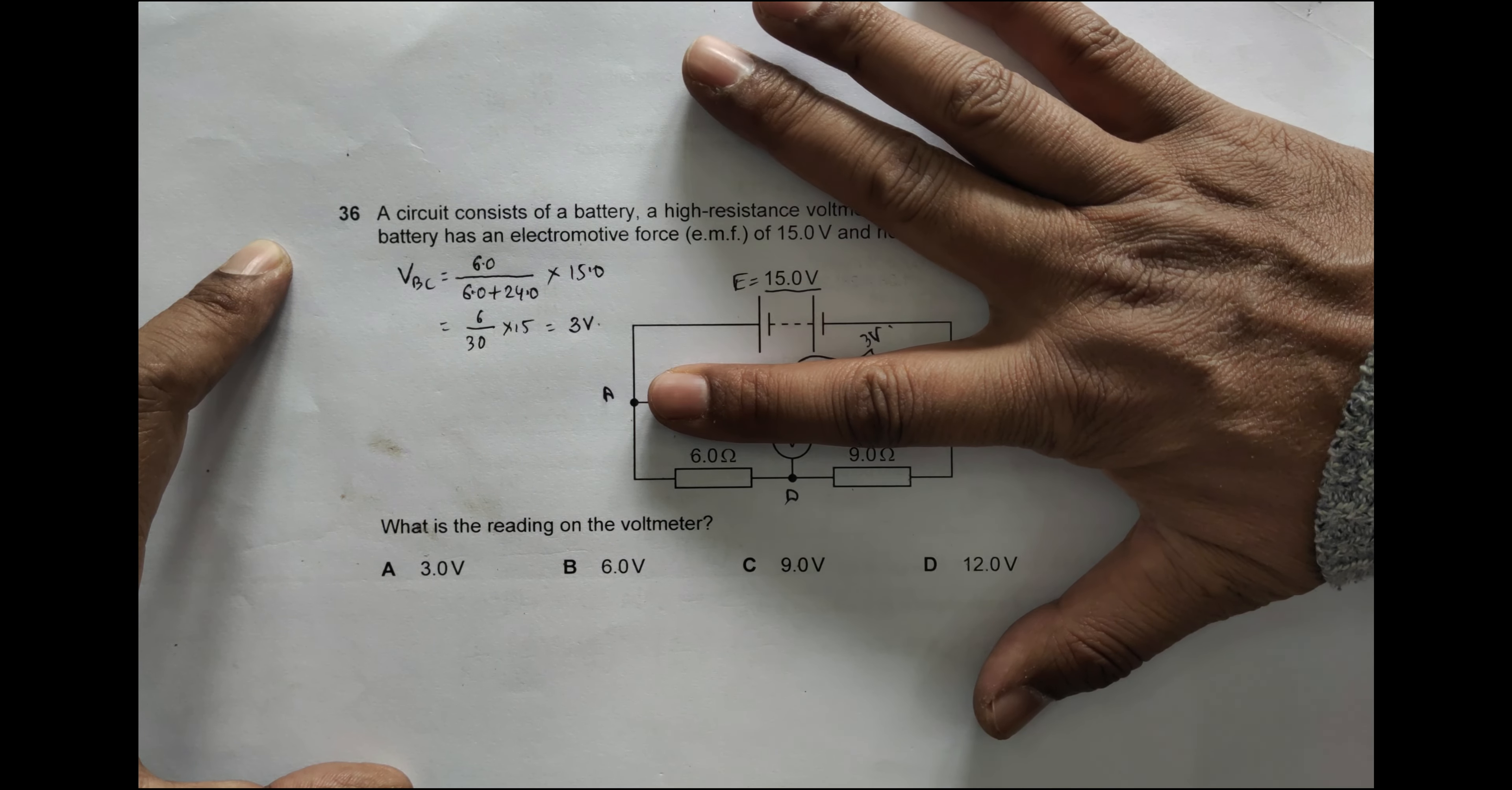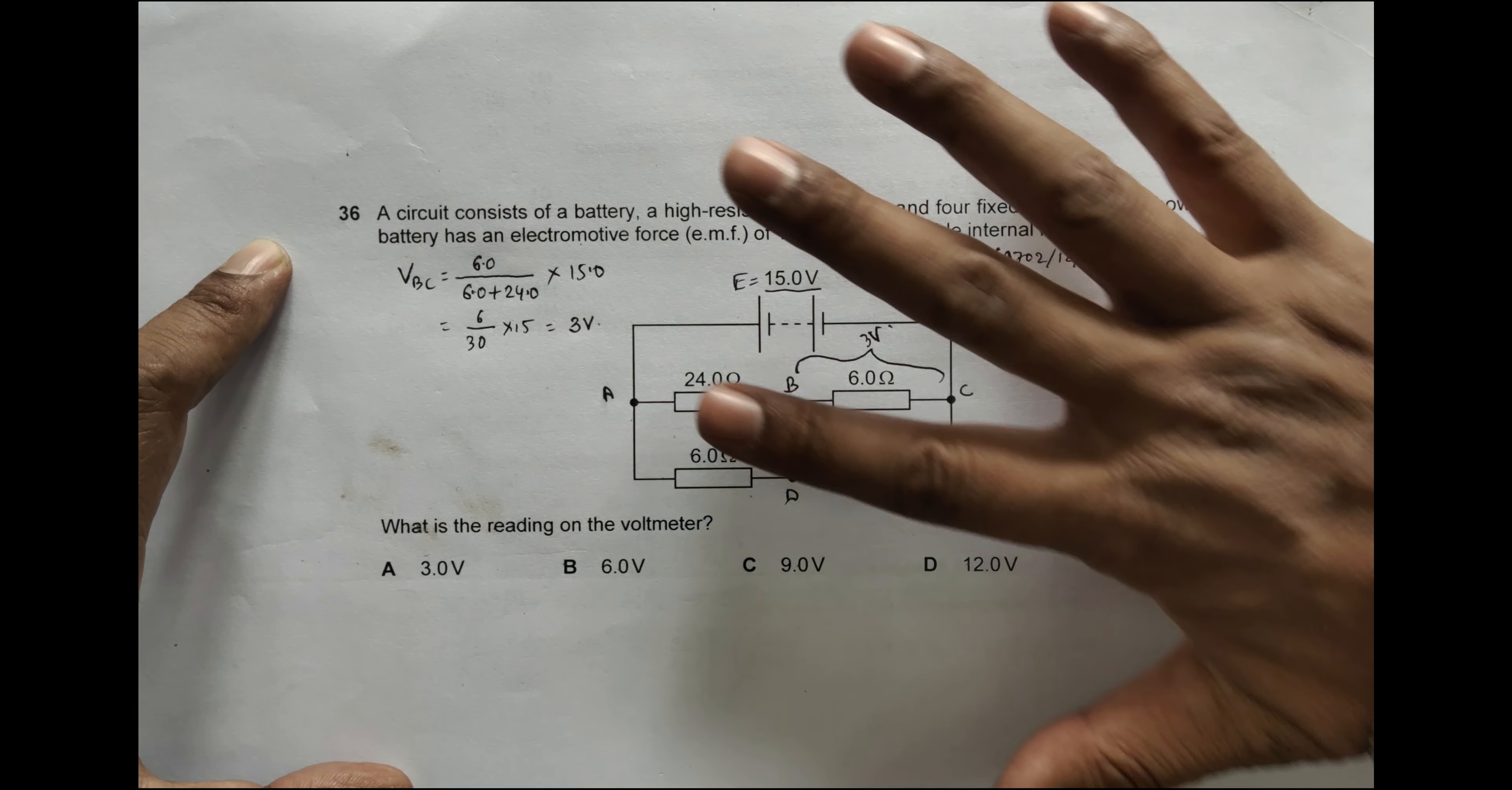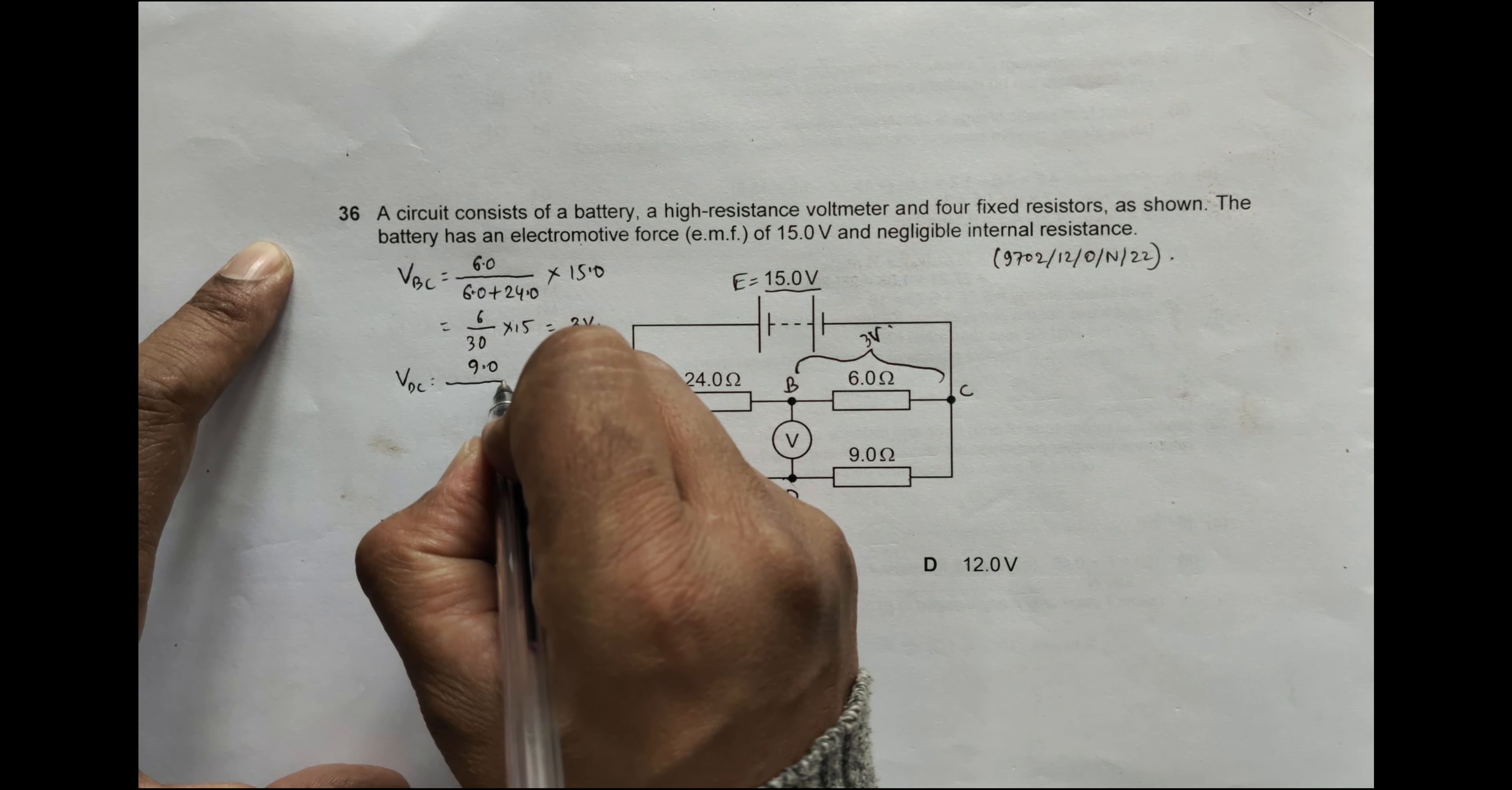Now again, let me just remove this. If I remove this, these two resistors form a voltage divider. That's why I must have VDC equal to 9.0 divided by 9.0 plus 6.0 into 15.0.